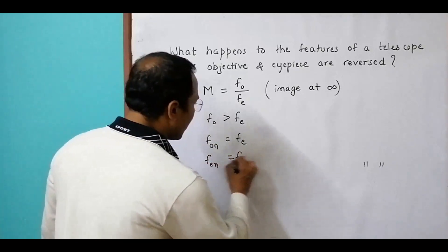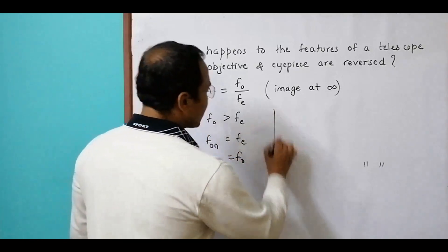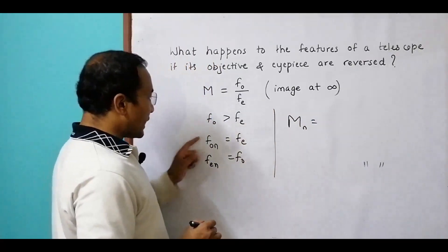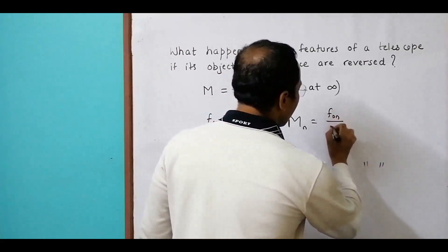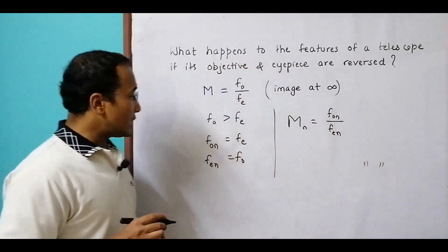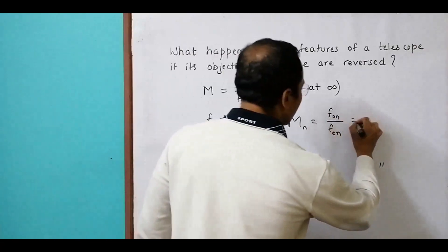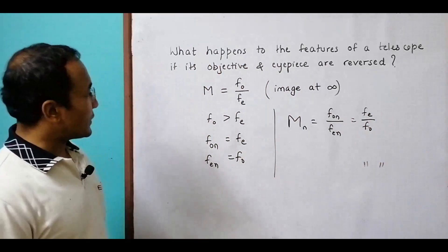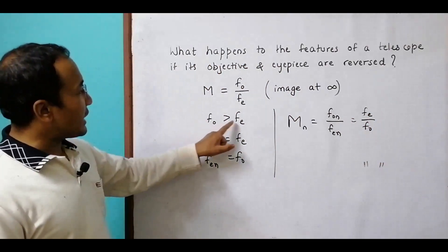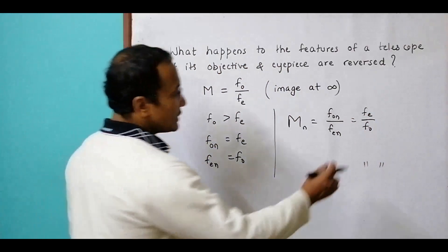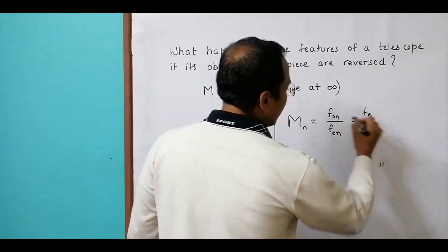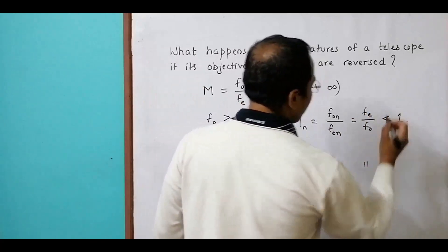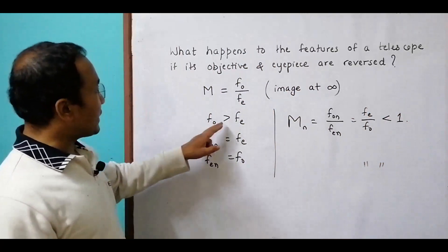The new focal length of the eyepiece, fe new, equals the old fo. Now the new magnification should be M new = fo new/fe new, which equals fe/fo. Now since fo is large and fe is small, this quantity will be very small, less than one. Here we made it more than one, now it becomes less than one.